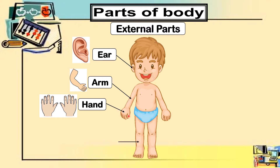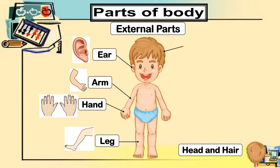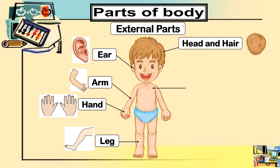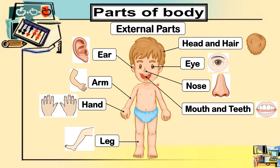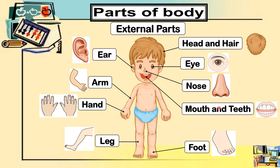On the lower part of your body are your two legs. Going upper, we have the head and hair. Another one we use for seeing is our eyes. In the middle of your face, we use this to smell flowers or food — this is our nose. We use this one when we are eating or speaking, and this is our mouth and teeth. On the lower part, we have your two feet.